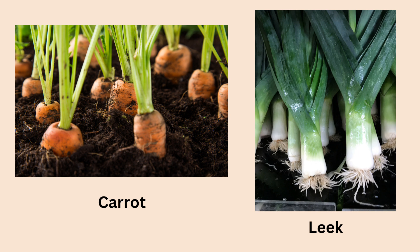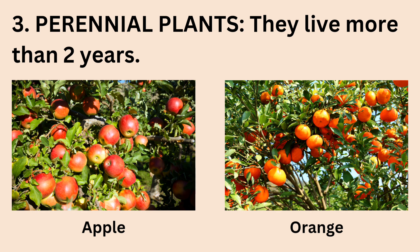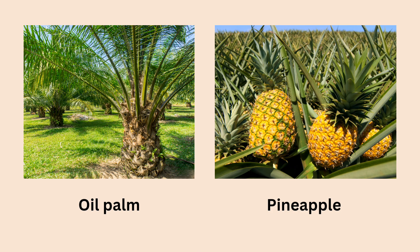The third group are referred to as perennial plants. These live for more than two years. Trees fall into this category. For example, we have apple tree, orange tree, oil palm. Panaipo too is another typical example of a plant in this category.